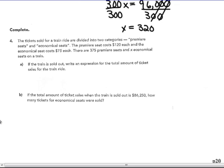And number 4. The tickets sold for a train ride are divided into two categories. Premier seats and economical seats. The premier seats cost $120 and the economical seats cost $75. There are 375 premier seats and X economical seats on the train. If the train is sold out, write an expression for the total amount of ticket sales for the train ride. Part A. Part B. If the total amount of the ticket sales when the train ride is sold out is $86,250, how many tickets for the economical seats were sold?